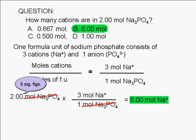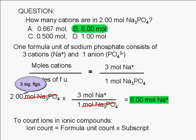To summarize, if we want to count ions in an ionic compound, we simply multiply the number of formula units by the subscript of the ion we're interested in. In the case we have here, the number of moles of sodium phosphate is essentially just multiplied by the three, which is the subscript of sodium, in order to get the number of moles of cations.